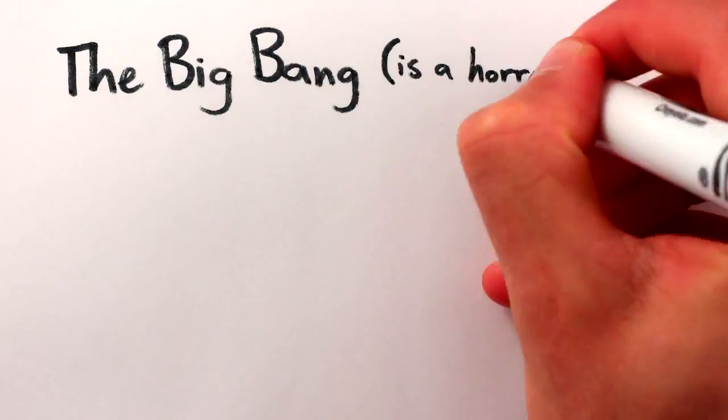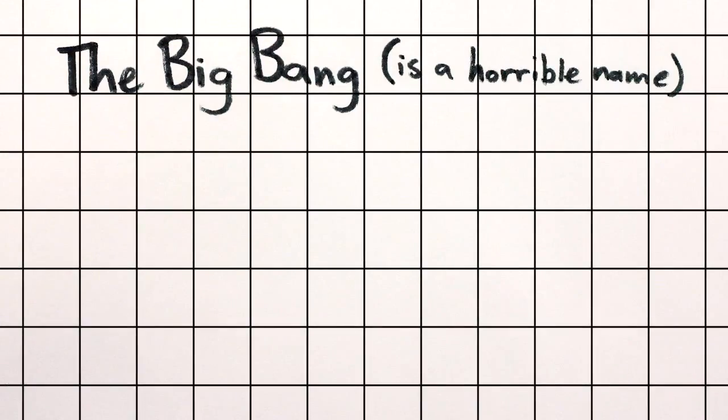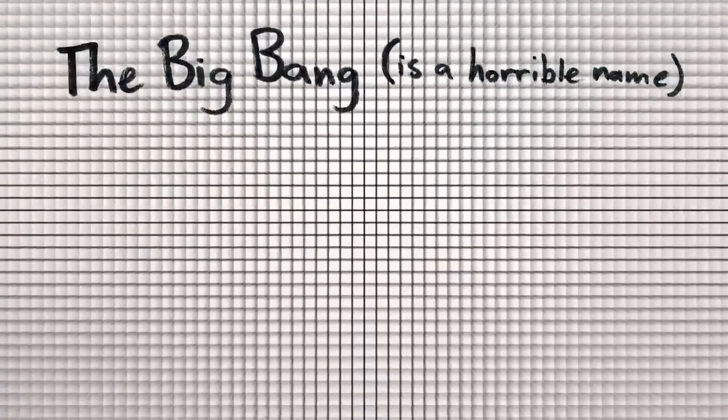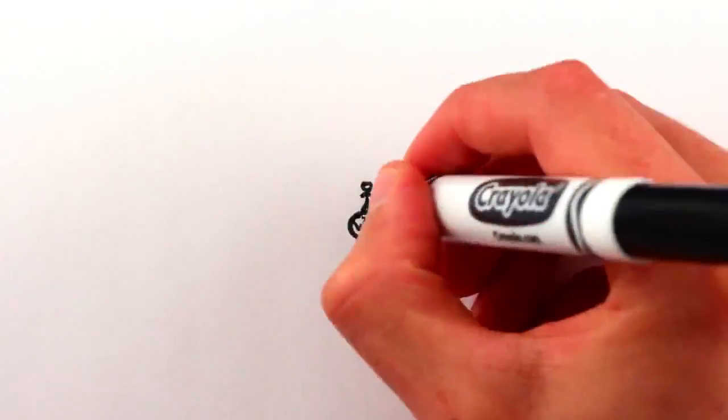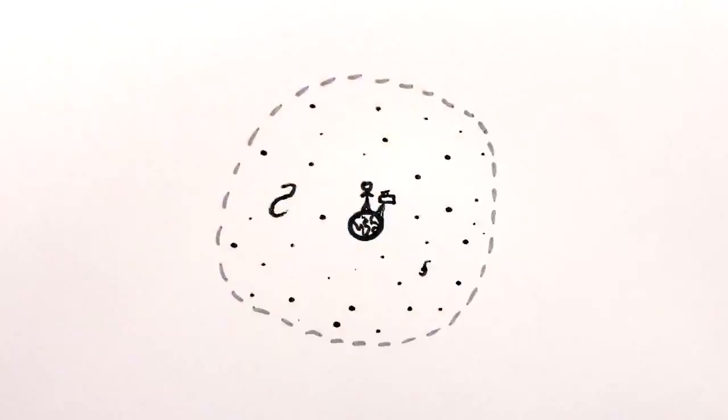But anyway, the event unfortunately known as the Big Bang was basically a time long ago when space was much more squeezed together, and the observable universe, which is everything we can see from Earth, was crammed into a very, very small piece of that space.